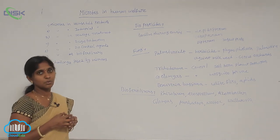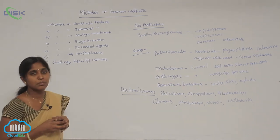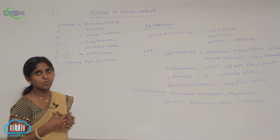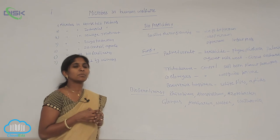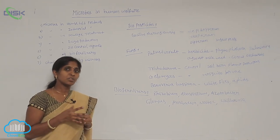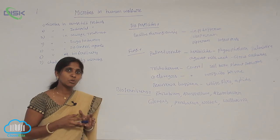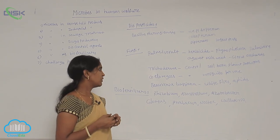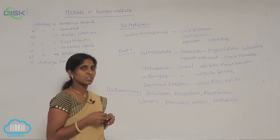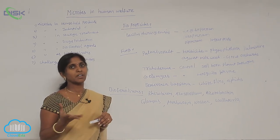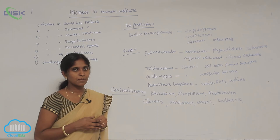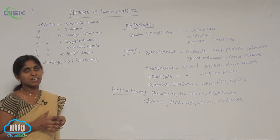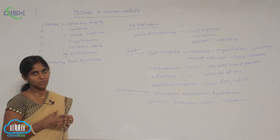The bio-fertilizers being used include Rhizobium, which is the best strain. Rhizobium is obtained from leguminous root nodules. It fixes atmospheric nitrogen into the soil, making that nitrogen available to the leguminous plant. By applying Rhizobium strains onto leguminous crops, there is high nitrogen fixation, leading to high yield production.